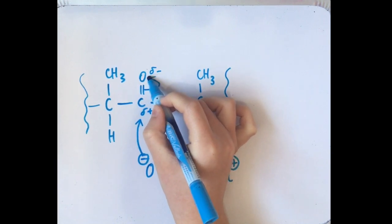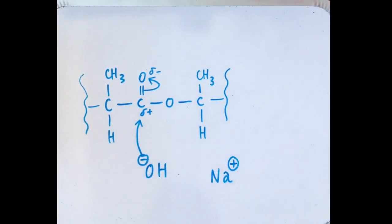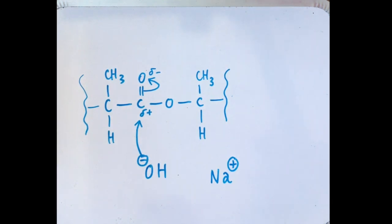The bonding of hydroxide ion pushes the pi electrons off the carbon and onto the oxygen atom, giving the oxygen a negative charge.